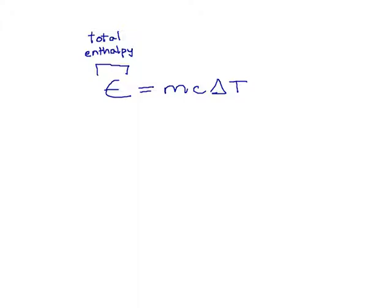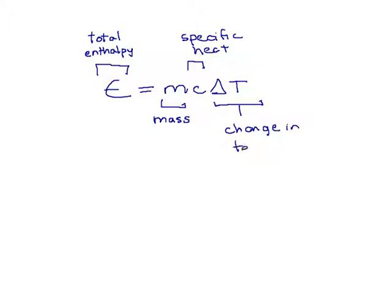And the other amounts here are the mass of the material whose temperature is changing, its specific heat, and delta T. Delta is a Greek letter, and in science it normally means the change in something. So this means the change in temperature. If you go from 100 degrees to 102 degrees, the delta T is plus 2. Temperature went up by 2 degrees.